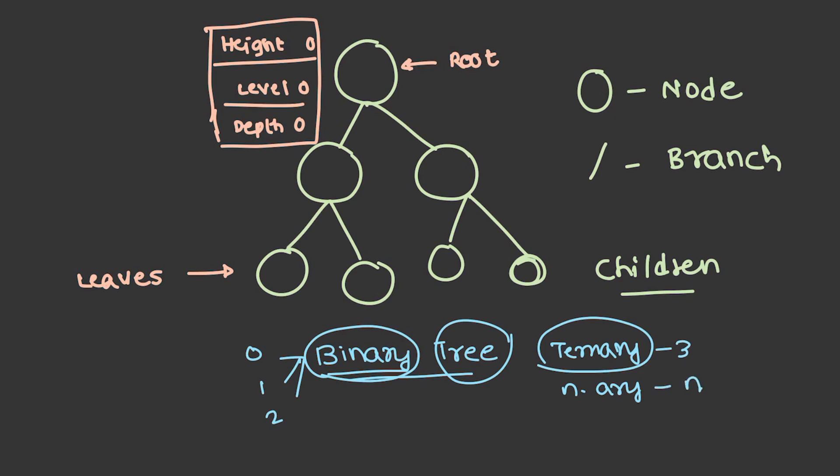Each and every part of a tree can be called as a node and these nodes are connected with branches. The node which is located at the top of the tree can be called as root and the nodes at the bottom level can be called as leaves. This node which is called as root can be represented with it is at height zero or in level zero or at depth zero. We don't have a precise definition for height, level and depth.